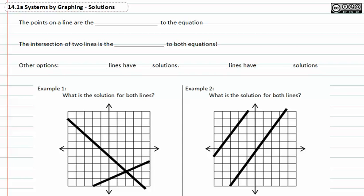In this section, we'll be learning about systems by graphing. The points on a line are the solutions to the equation. The intersection of two lines is the solution to both equations.